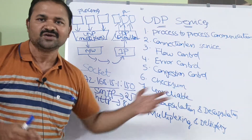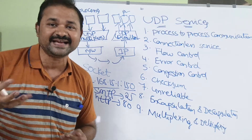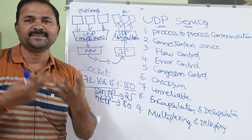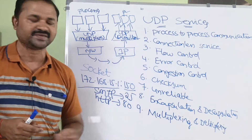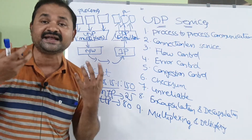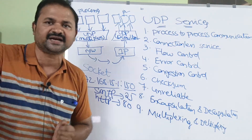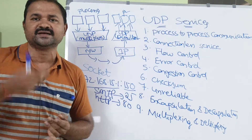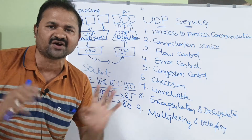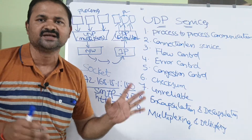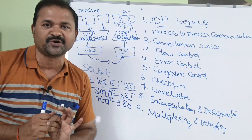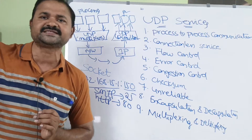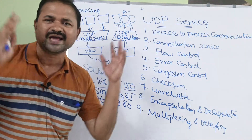The next one is checksum. Checksum is useful for error detection. At the receiver side, the receiver checks whether there is any error in the message or header with the help of the checksum. The next one is unreliable. UDP is an unreliable protocol. The sender sends the data but after sending the data, the sender doesn't bother about whether that message was correctly received by the receiver or not. There are no error reporting mechanisms and no acknowledgements.